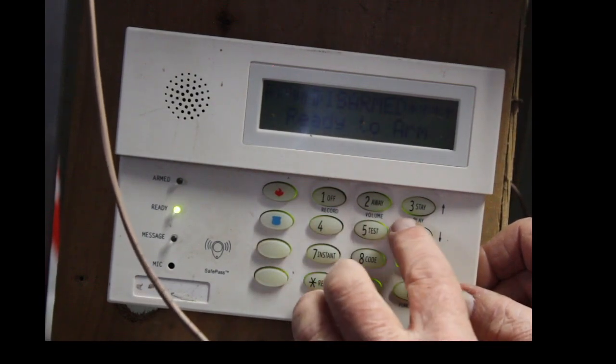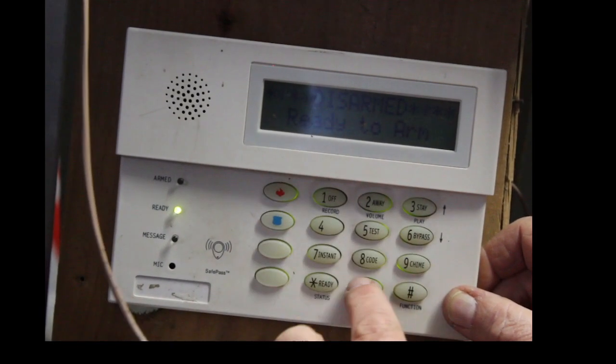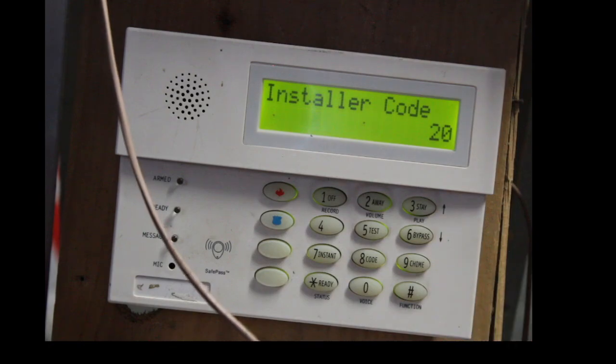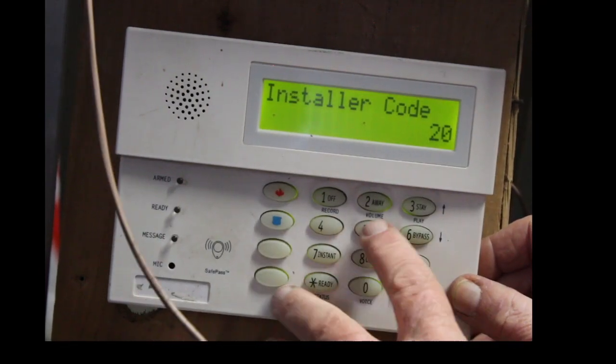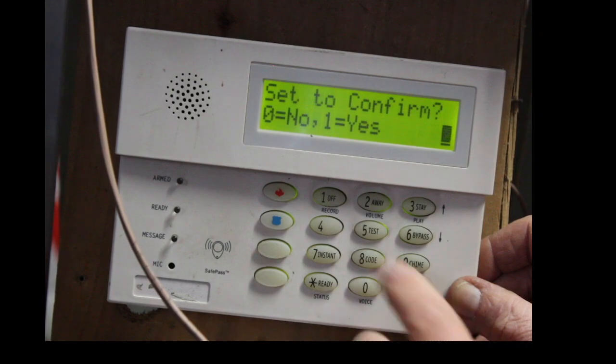Didn't even get me in the program. 6, 3, 2, 1, 8, 0, 0. There we go. Sorry. My installer code was 6, 3, 2, 1. So, the first thing you want to do is go into star 56 once you get in the program.